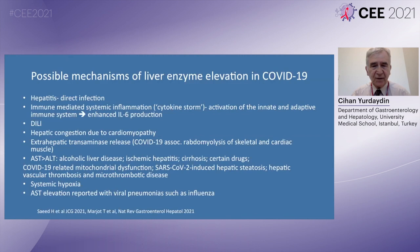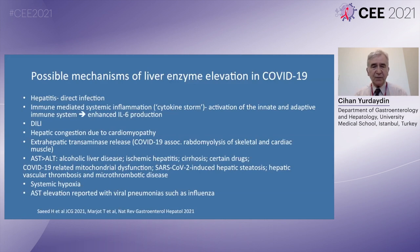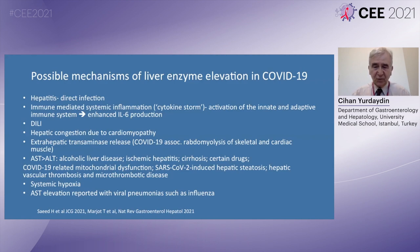Hepatic congestion due to cardiomyopathy, extra-hepatic transaminase release due to COVID-19-associated rhabdomyolysis of skeletal and cardiac muscle are possible mechanisms. The predominant elevation of transaminases should suggest alcoholic liver disease, ischemic hepatitis, or cirrhosis, but certain COVID-19-related mechanisms include mitochondrial dysfunction, hepatic steatosis, hepatic vascular thrombosis, and microthrombotic disease. It has to be remembered that AST elevation has also been reported with viral pneumonia such as influenza, and this also needs to be taken into consideration.